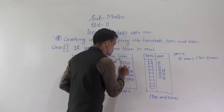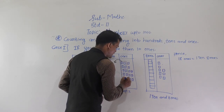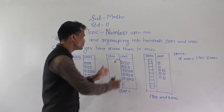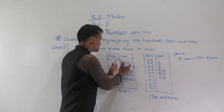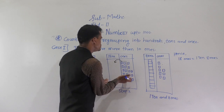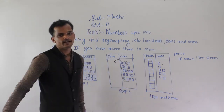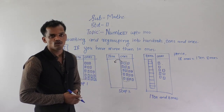Counting the bricks: 1, 2, 3, 4, 5, 6, 7, 8, 9, 10. And those 10 bricks you shift into the 10s column.